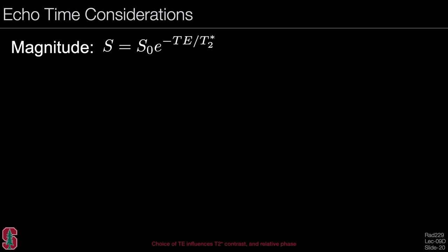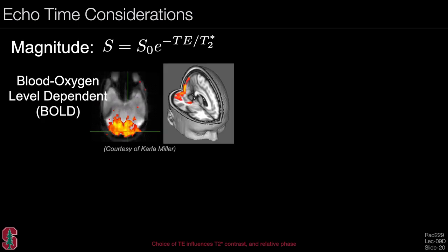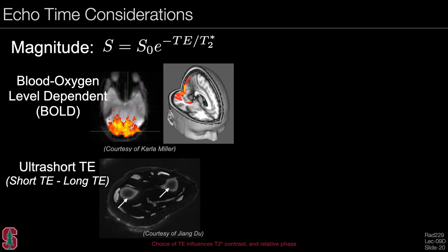Regarding echo time considerations: the magnitude of the signal in most of these sequences is the signal after the RF pulse with some T2-star decay. This can be used in BOLD imaging, blood oxygen level dependent imaging, where we take advantage of the T2-star difference between oxygenated and deoxygenated blood. Very short TE imaging, as a subtraction of short TE minus long TE, allows you to see very short T2 species due to less signal decay.